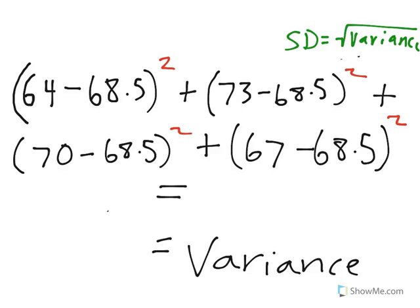When you do that, you get 45. Then, in order to get the variance, you have to find the average of this. So you divide 45 by 4, which equals 11.25, which is equal to the variance.